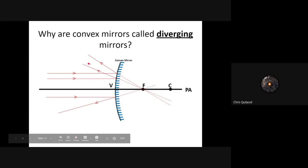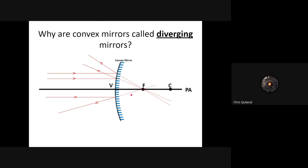Even though the reflected rays don't actually intersect with each other, we can use those virtual rays — those dotted lines — to help us determine where the image is. Just like yesterday, any incident ray traveling perpendicular to the principal axis will have a reflected ray that diverges and never intersects, but those dotted lines, those virtual rays, they still all travel through the focal point.